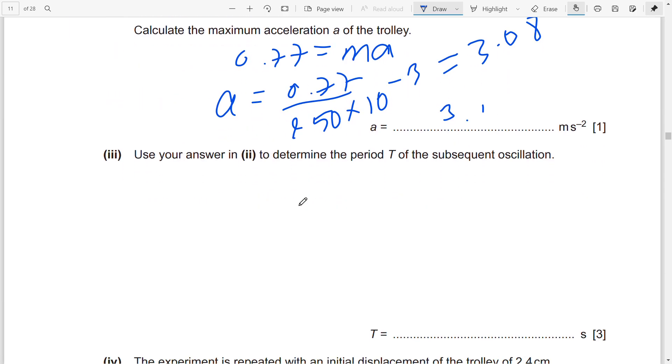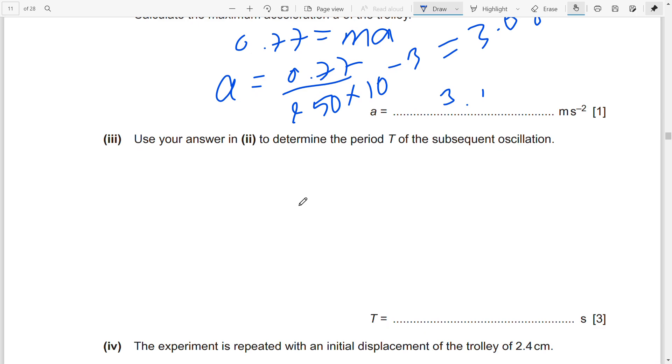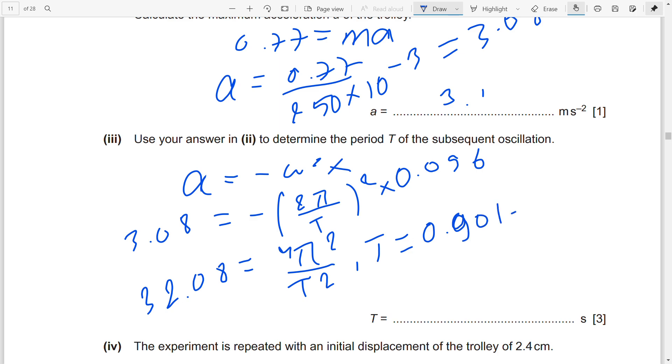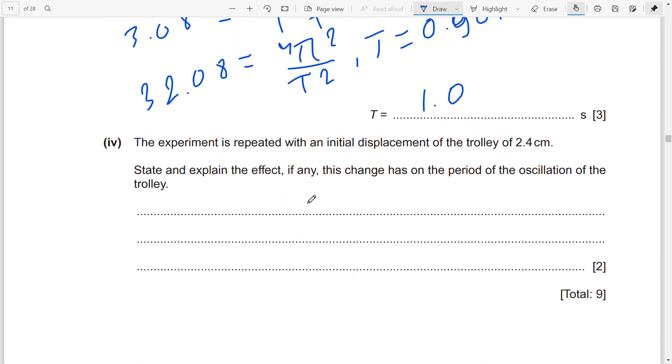From the equation a = -ω²x, we have 3.08 = ω²x. From here you can find omega and then the time period T. You'll get the value of T as 0.00901, which you can write as 1.0 seconds. So the time period is 1.0 seconds.